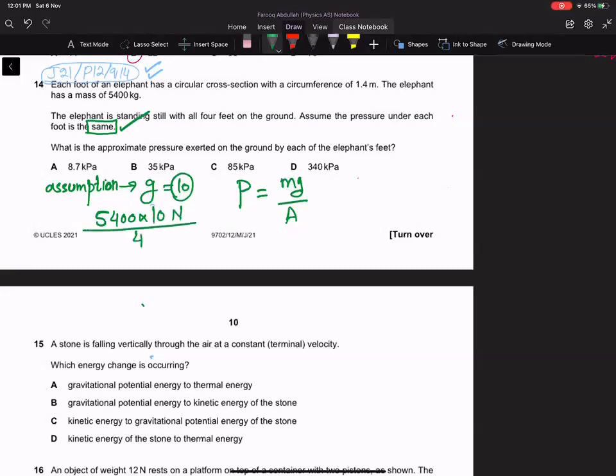We'll get 54,000 divided by 4, which will give us 13,500 newton on every foot. 13,500 newton, and the circumference of the feet is 1.4 meters.